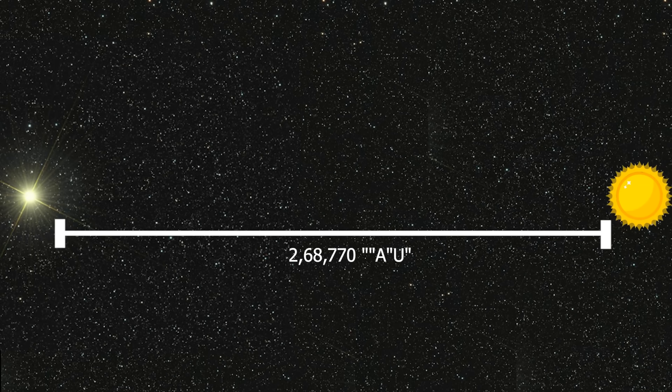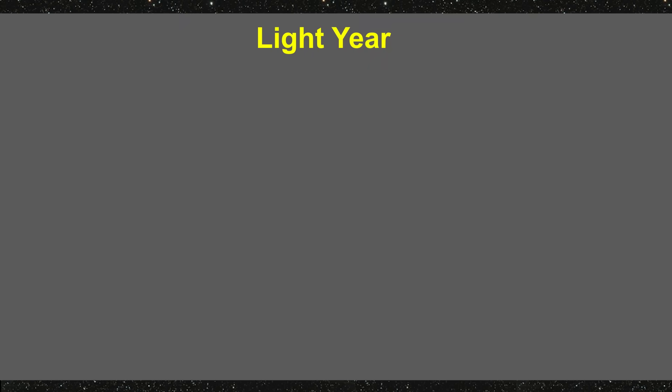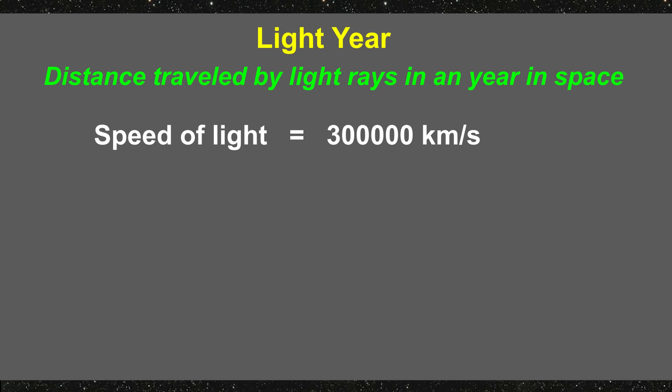To solve this problem, we make use of one more unit of distance called light year. Light year is the distance travelled by light rays in a year of time in space. It is a fact that nothing can move faster than speed of light in space. Its numeric value is 3 lakh km per second.